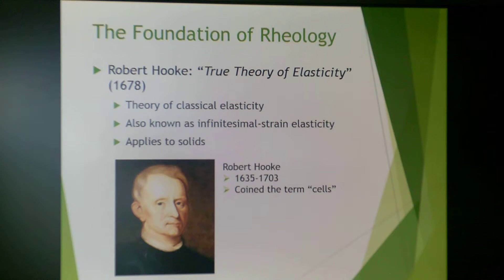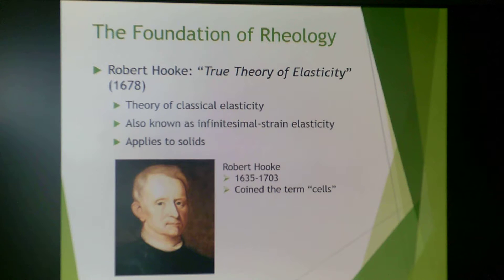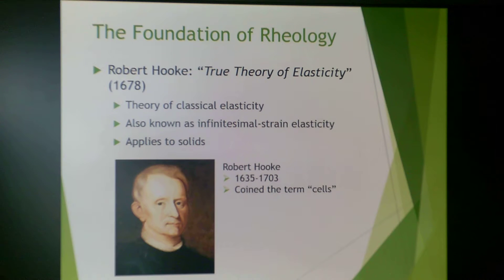We just talked about two of the modern fathers of rheology, but they stand on the shoulders of giants, as the rest of us do in science, going back to individuals such as Robert Hooke. Robert Hooke came up with the true theory of elasticity in 1678, known as classical elasticity or infinitesimal strain elasticity, which applies to solids. He lived from 1635 to 1703, and he also coined the term cells — as in body cells, plant cells, and things like that.